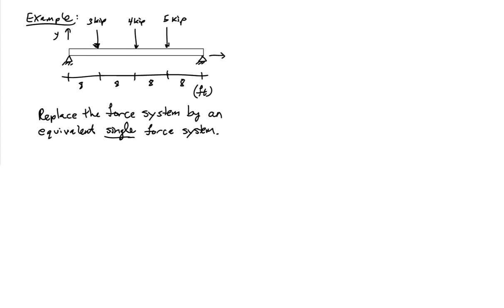Let's look at another example as an application of the use of this notion of equivalent force systems. So here I have a beam, it's supported on two pins, and it's subjected to three loads: a three-kip load, a four-kip load, and a five-kip load. One kip is 1,000 pounds, and they're spaced out at 8 feet along the span of the beam.